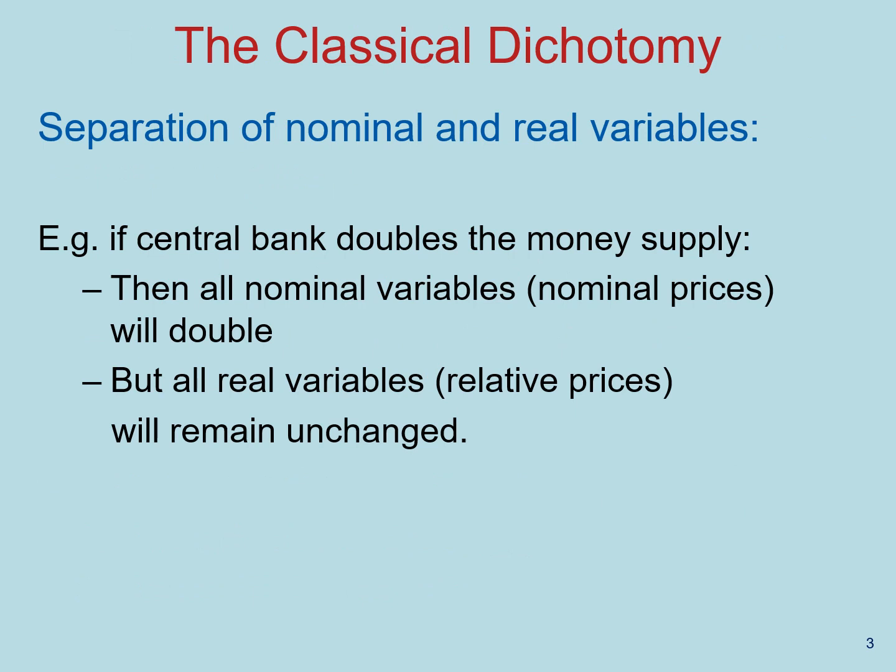The classical dichotomy is the theoretical separation of nominal and real variables. That means that monetary developments affect nominal variables but not real variables. For example, if the central bank doubles the money supply, all prices and nominal variables will double, but all real variables would remain constant.